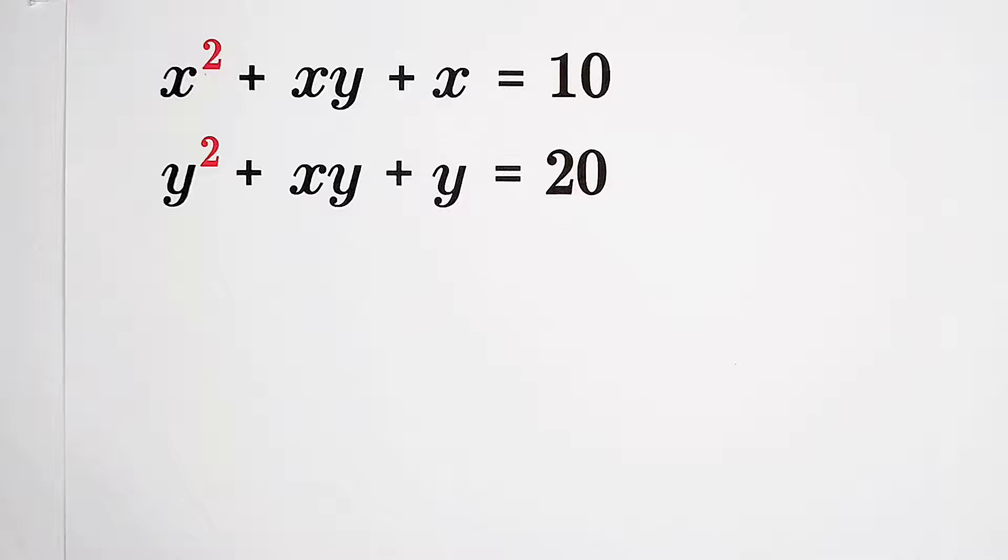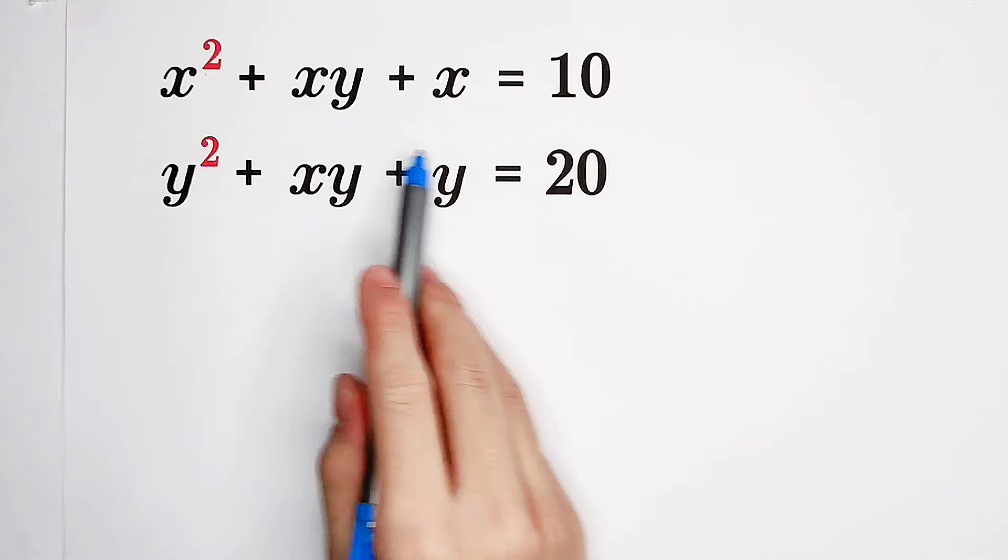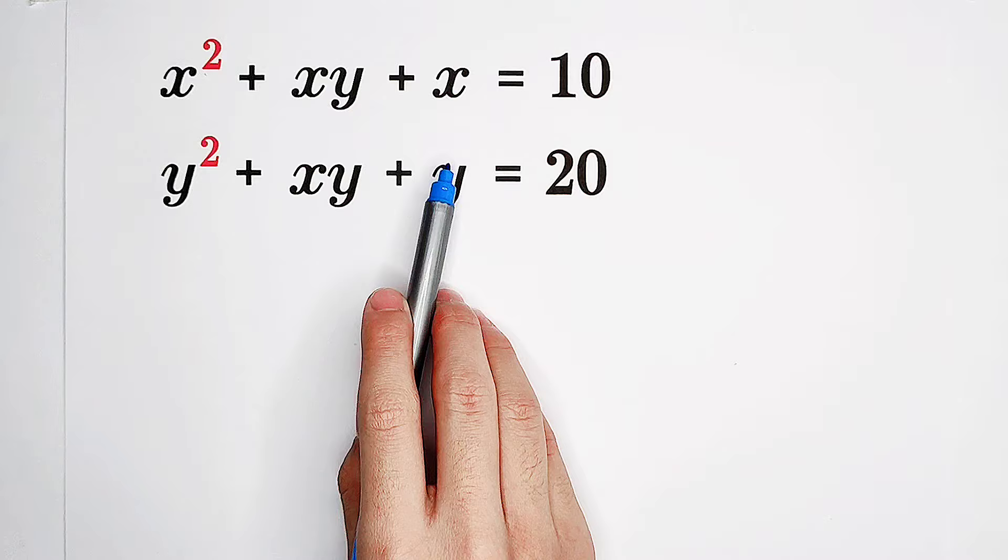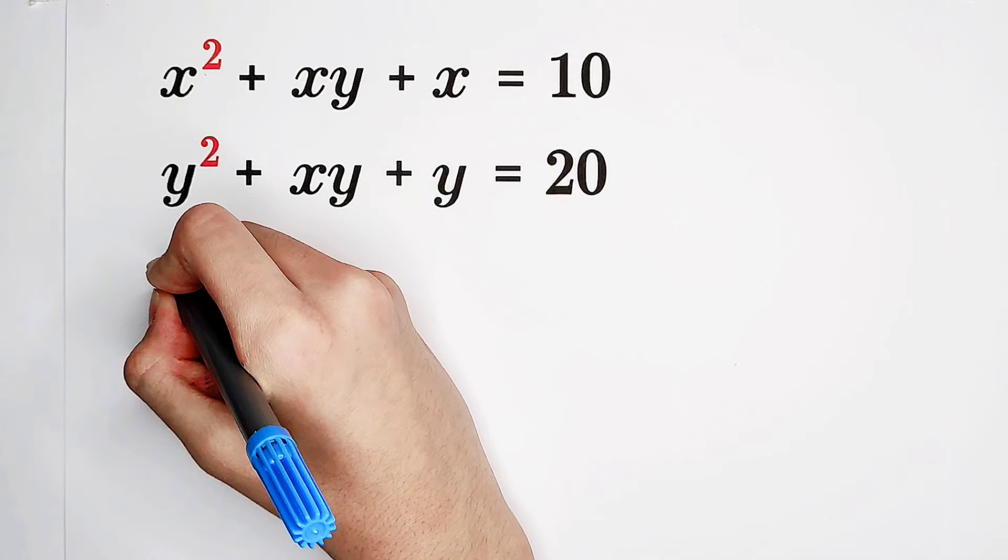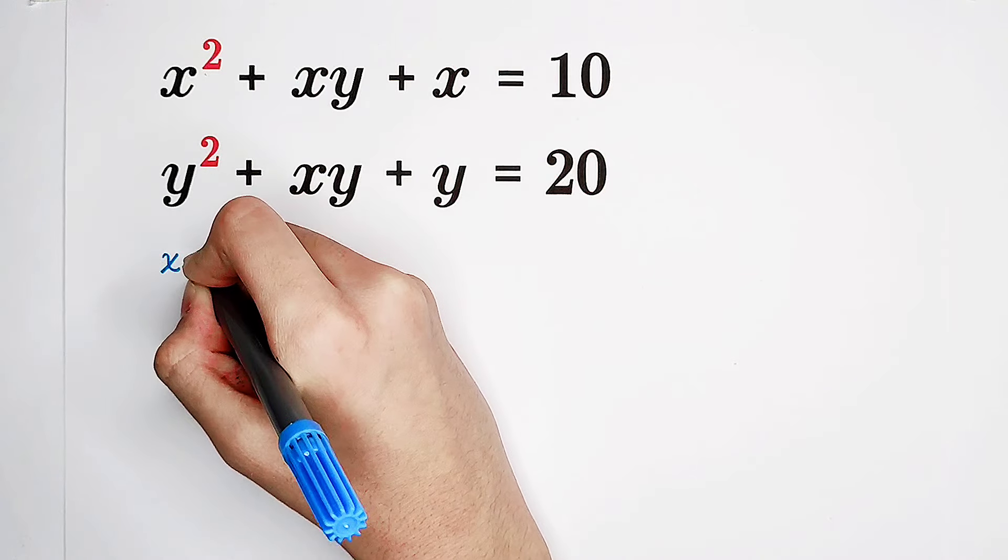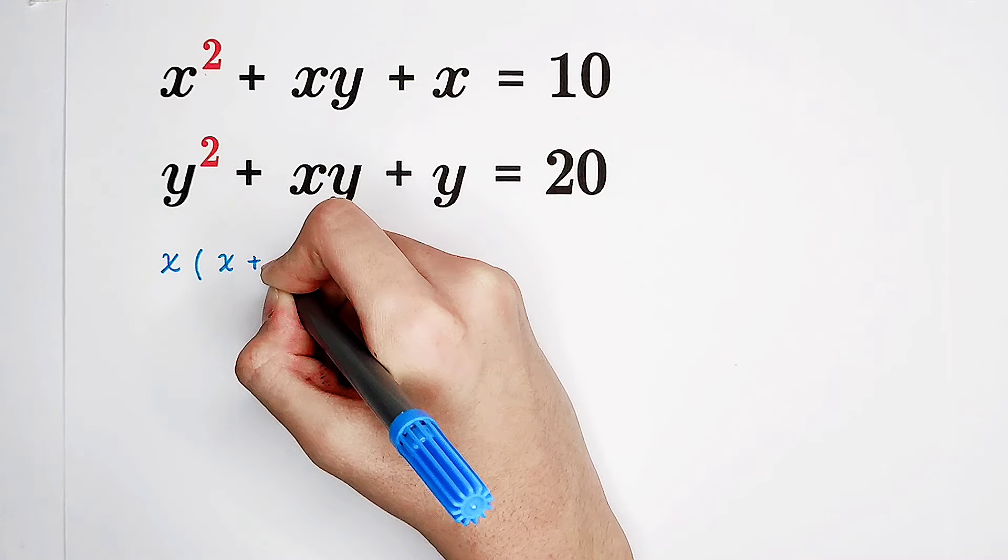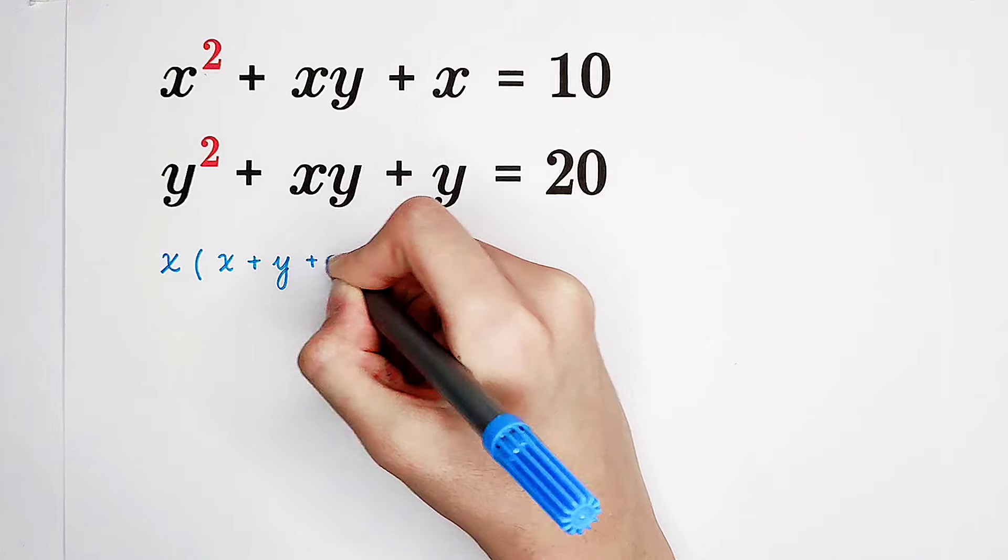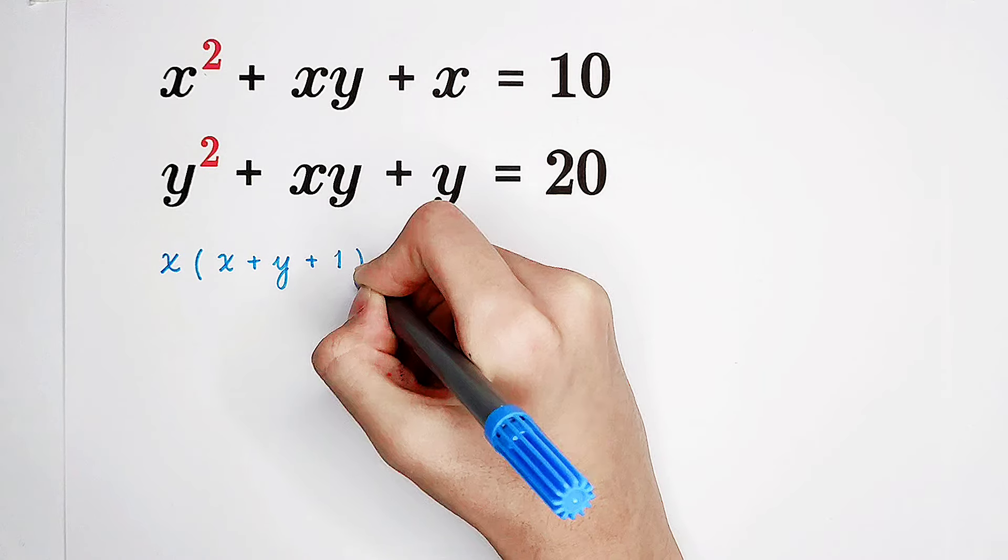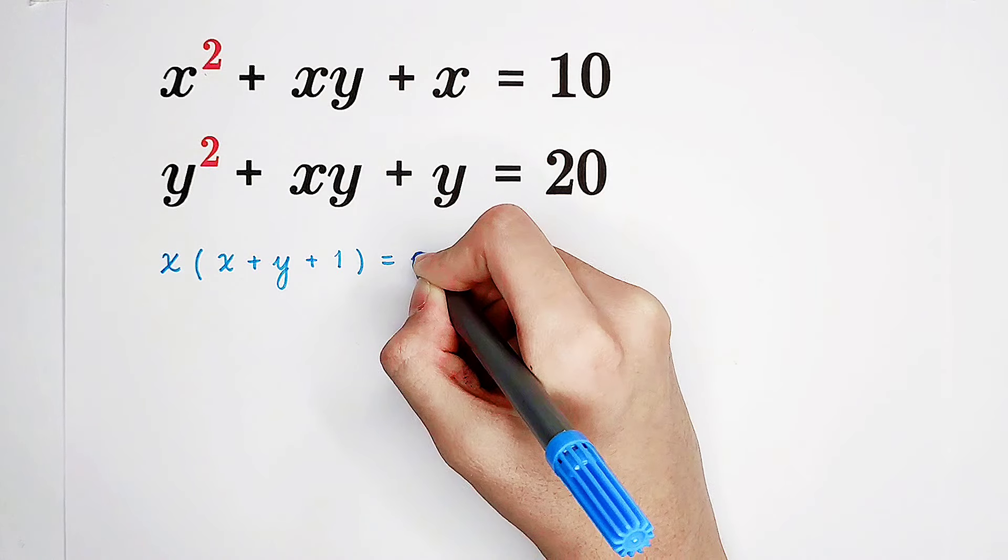How shall we solve it? In our first equation, on the left side, we can take out an x. So that means x times (x plus y plus 1) equals 10.